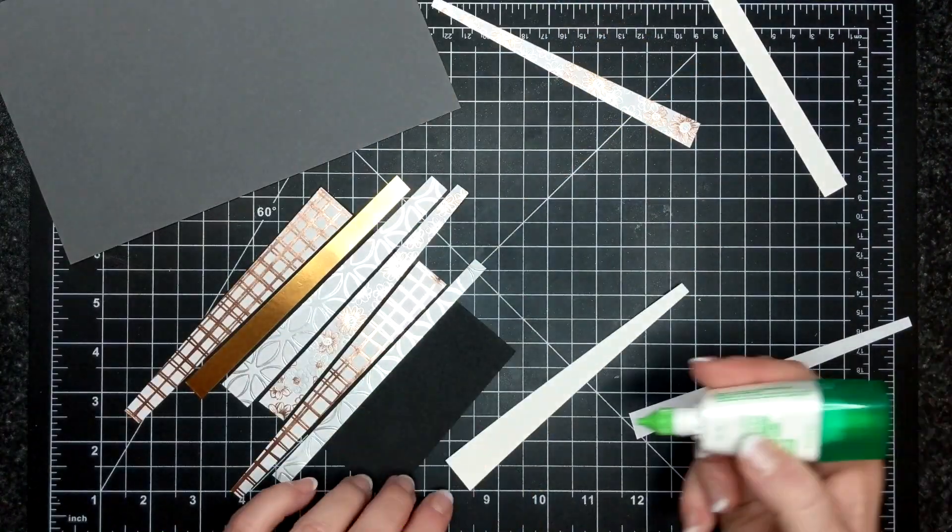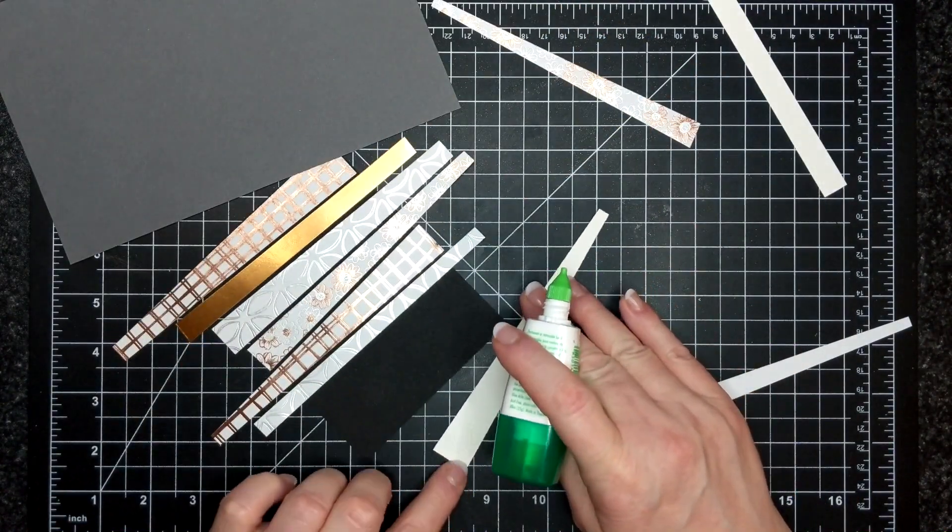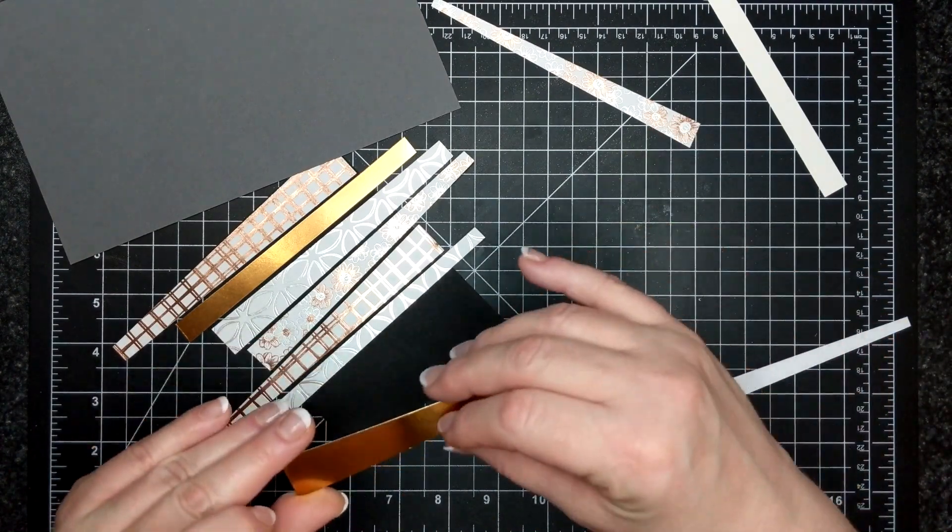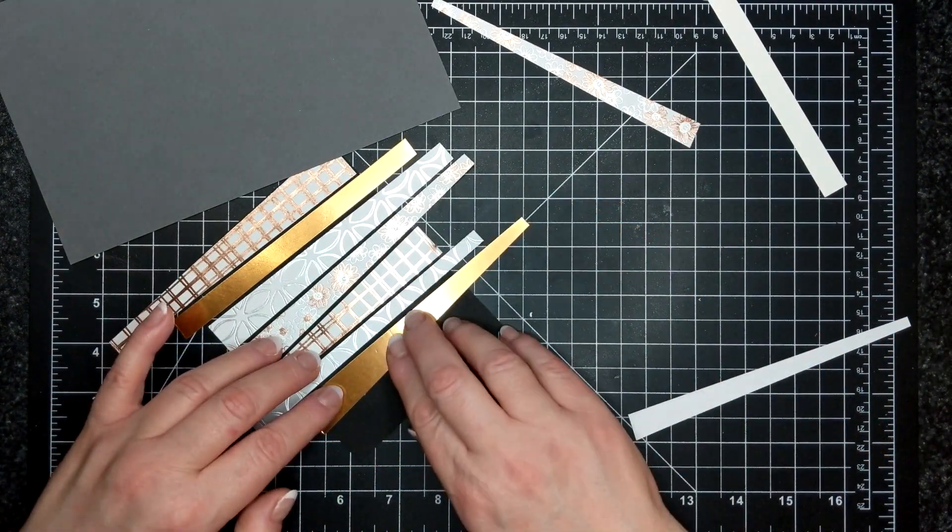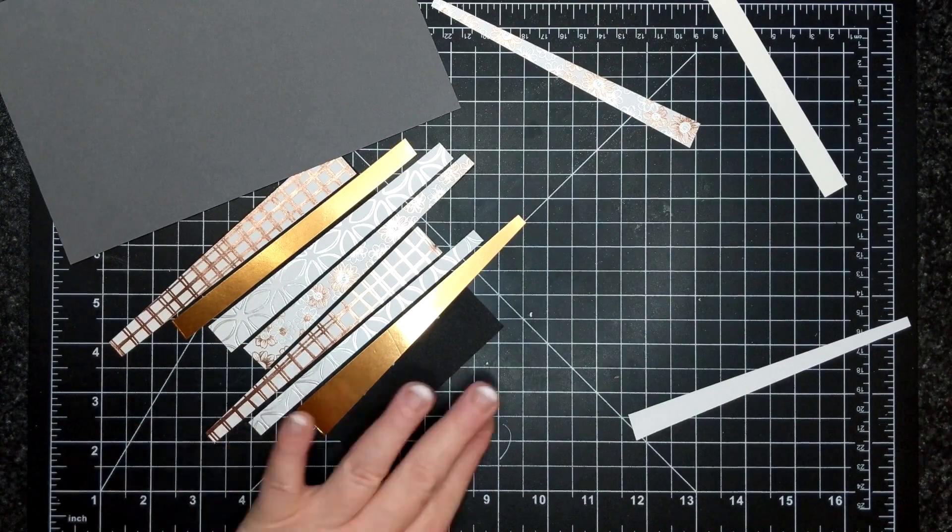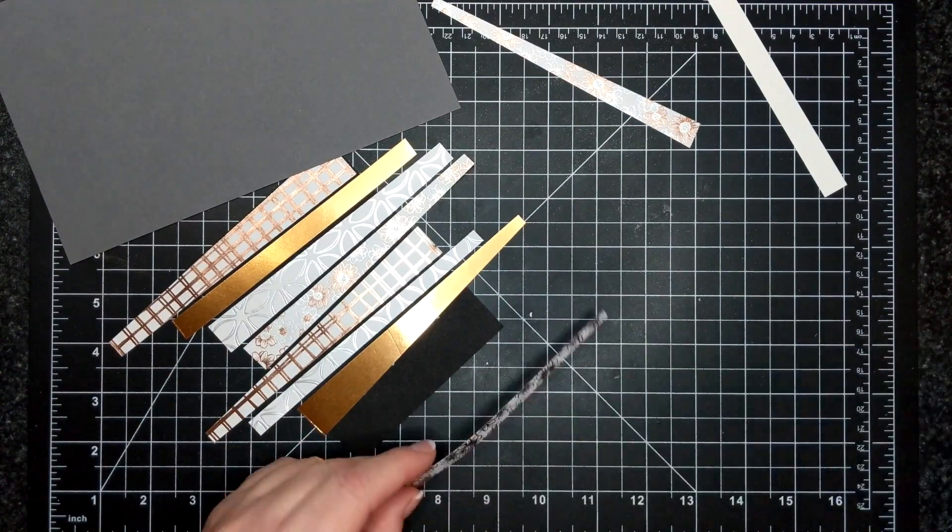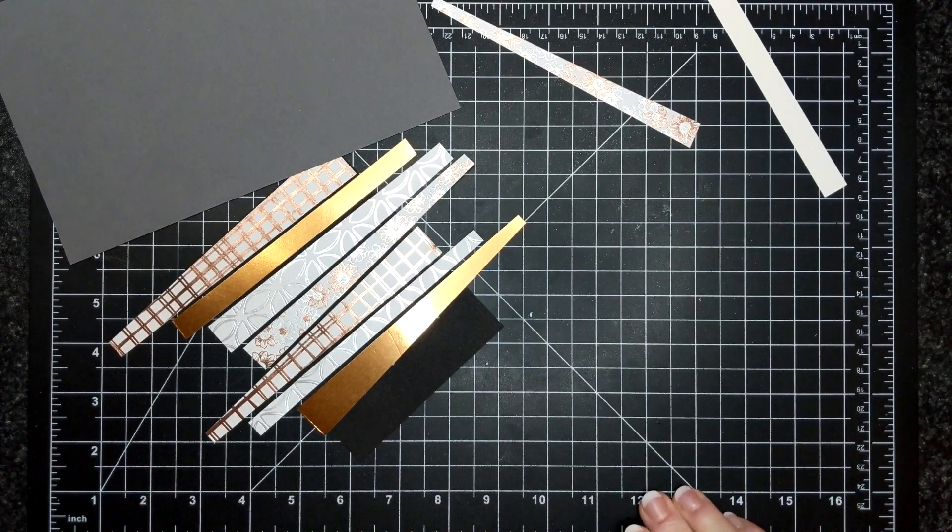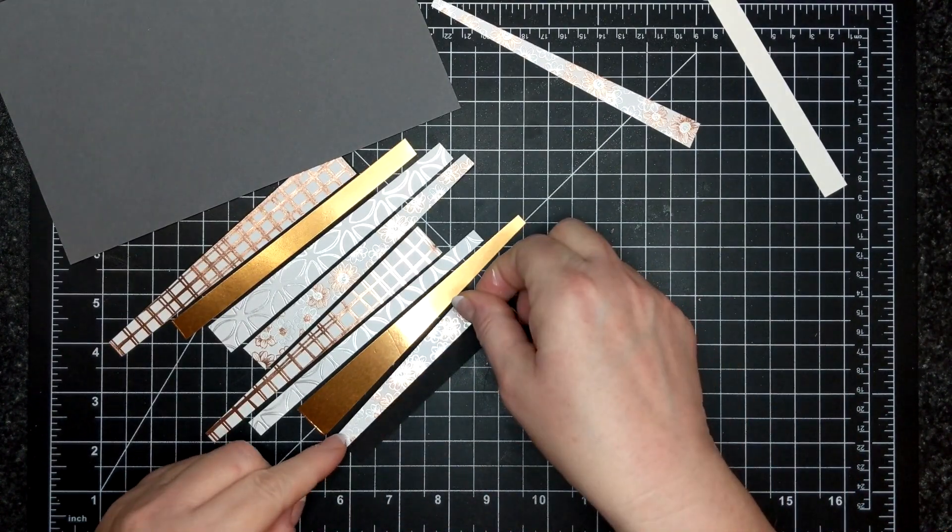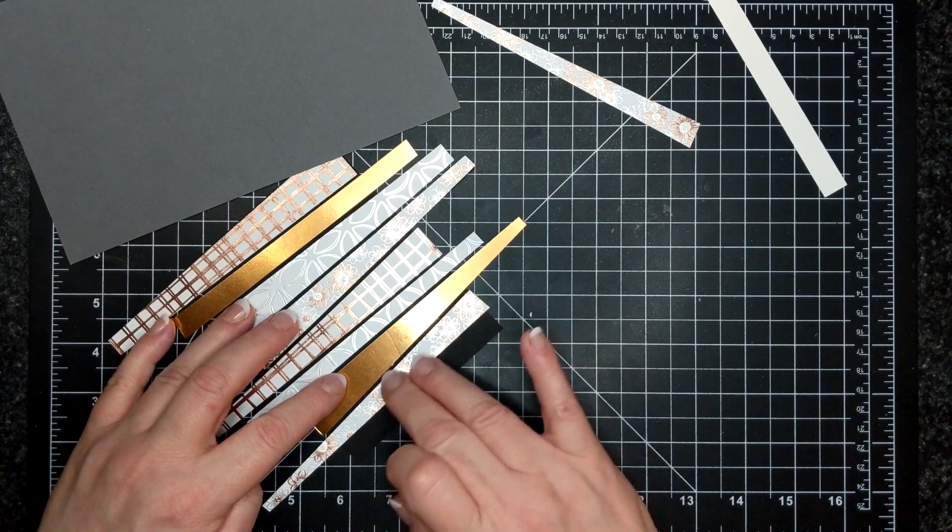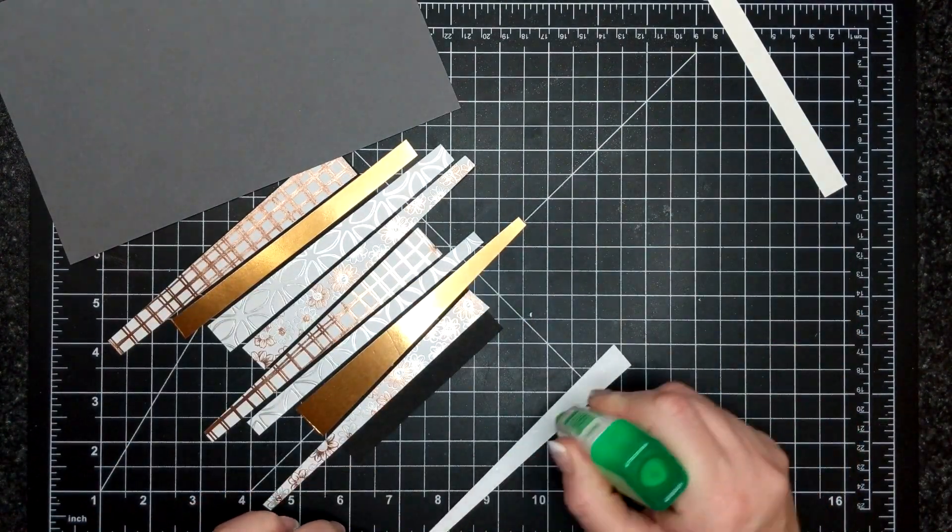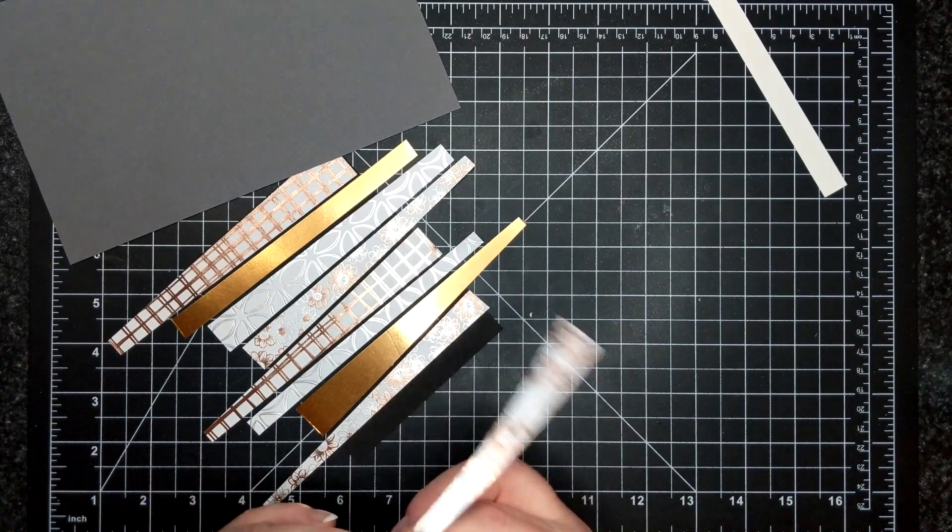So the card kit will come with this black cardstock, a whole bunch of angled strips plus the foils, a basic gray card base and also a whisper white mat as well, and of course two envelopes. You'll get two so you get to play around. There's a lot of little strips in your pack.